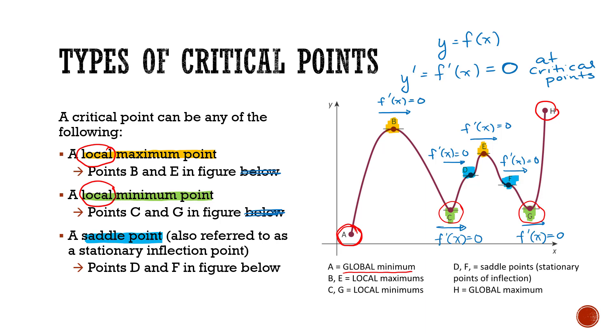But A here, this point right here, that is the overall minimum. So that would be referred to as a global minimum as opposed to a local minimum.